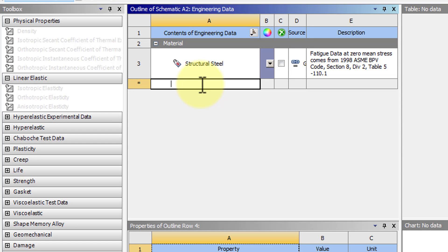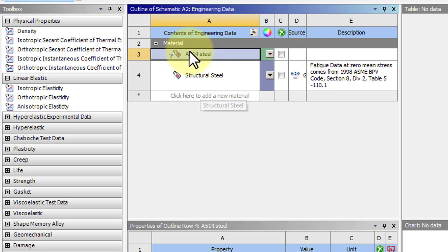And I'll call the material A514 Steel and Enter. So it has this material, but we have to give it inputs. And drag isotropic elasticity onto the material. I believe you can also double-click.